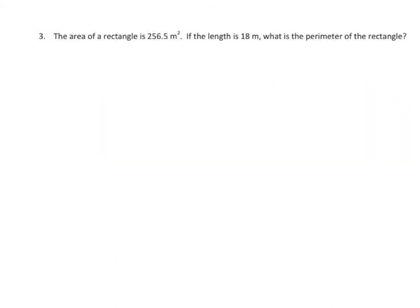This one's pretty complicated. The area of a rectangle is 256.5 meters squared. If the length is 18 meters, what is the perimeter? So we have a problem dealing with both area and perimeter. We know the area is found by length times width. We have the length already, but we don't have the width. So we'll have to figure that out.